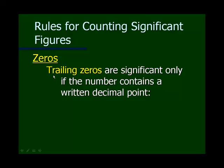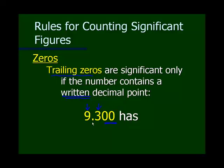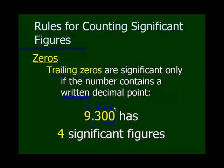The last rule about zeros is trailing zeros. Trailing zeros are significant only if the number contains a written decimal point. Trailing zeros are zeros that end a number. So if we're counting: the nine and three count because they're not zeros, and these trailing zeros — is there a decimal point? Yes. So they count too, giving a total of four significant figures. It's really the zeros that are the tough part in counting significant figures.